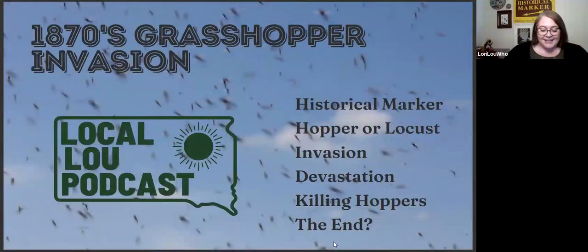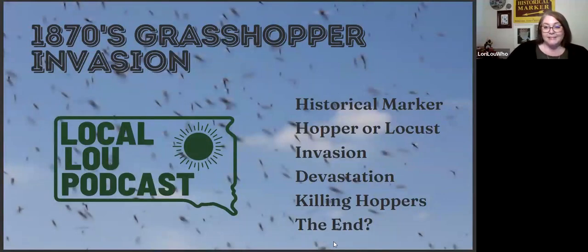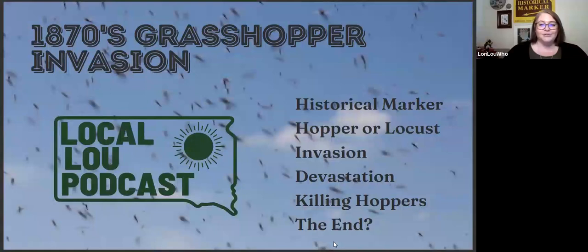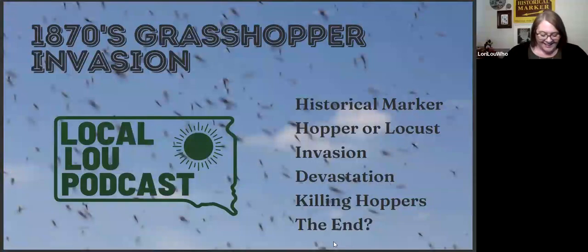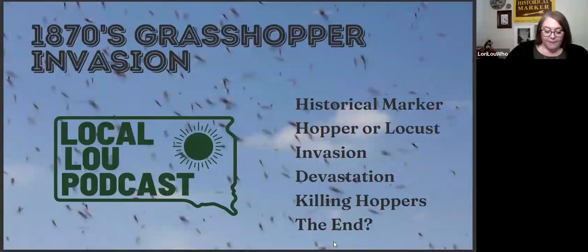Today we're going to look at the historical marker for the 1870s grasshopper invasion. It's located at Spellerburg Park in Sioux Falls, South Dakota. Specifically, if you're going to visit the park to look for this historical marker, it's on the 22nd Street side of the park, right by the playground. Today I'm going to cover the text on the historical marker, and then we're going to talk about: was it really a grasshopper, the invasion itself, the devastation, killing the hoppers, and the end of the story so far.